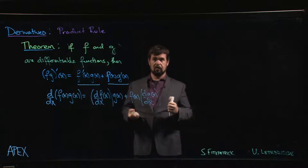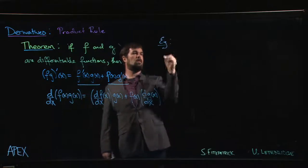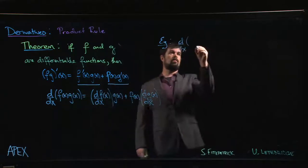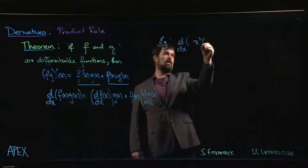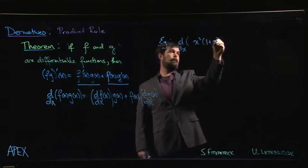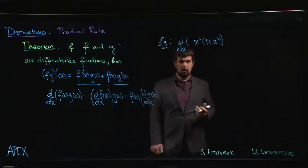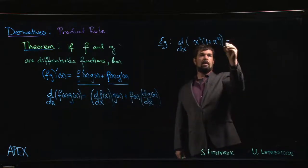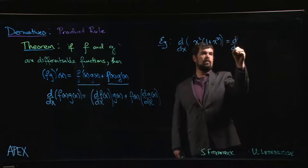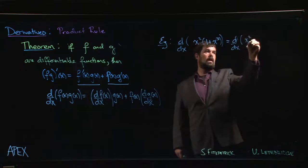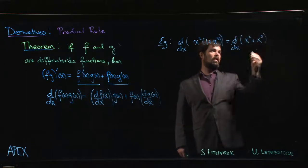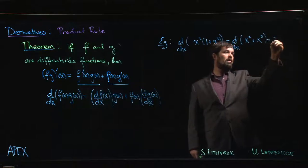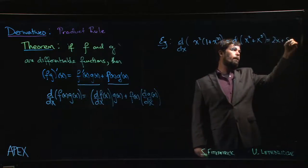Let's say we want to do something like x squared times one plus x cubed. The way we would have had to do this previously is we'd have to first do the multiplication, so this is the derivative of x squared plus x to the fifth. Then we can use the sum rule to differentiate term by term using the power rule and we get 2x plus 5x to the fourth.